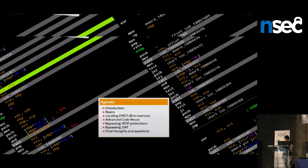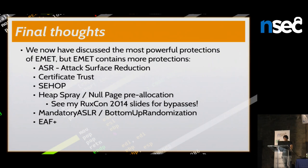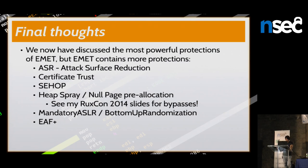Final thoughts: EMET has many more protections beyond what I discussed. For example, attack surface reduction can prevent Java from loading in the internet zone. There are also heap spray protections. Bypassing these is not too hard from a technical perspective — I skipped them today but they are covered in my bachelor thesis and in the slides.